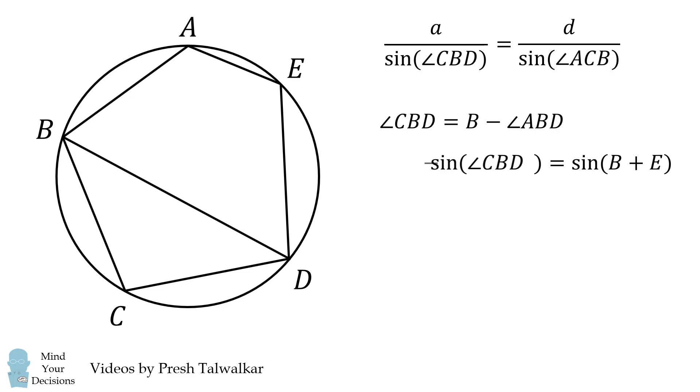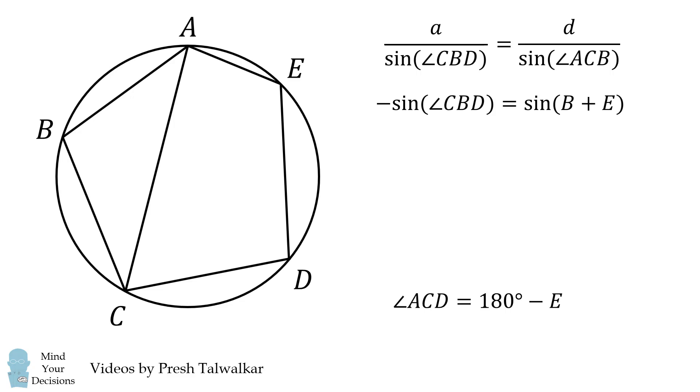Therefore, the left hand side is negative sine of angle CBD. Now we will derive a similar equation from the cyclic quadrilateral ACDE. Angle ACB is equal to C minus angle ACD. We then substitute in what we derived, and then simplify this equation. Take the sine of both sides, then use the sum formula. So the left hand side becomes negative sine of angle ACB.